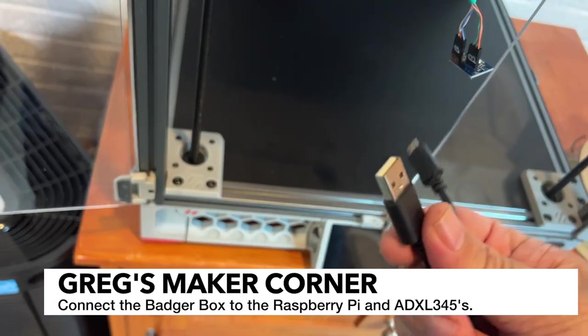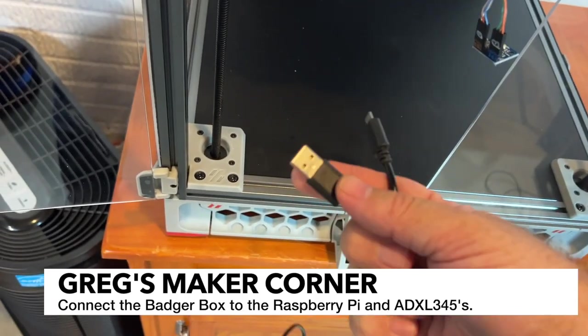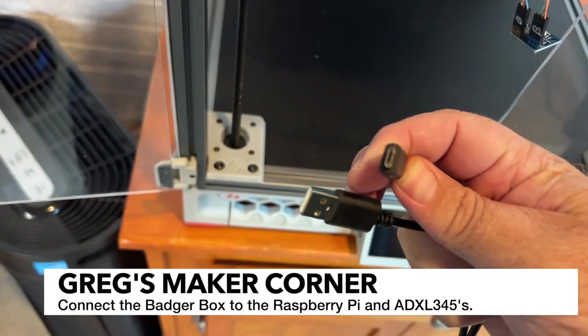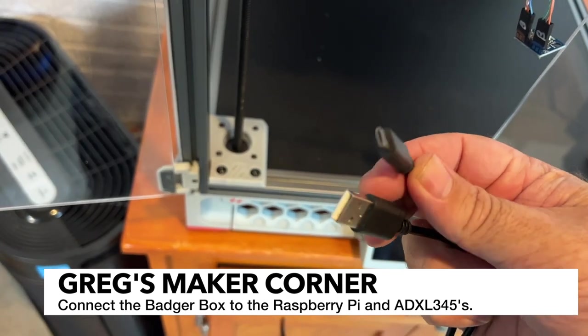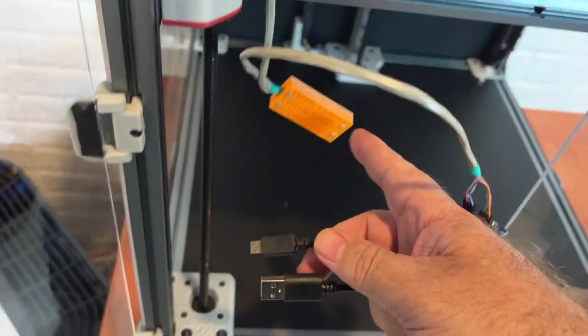Next up I'm just going to be connecting this end to the Raspberry Pi and then this end, make sure you get the right cable type and that it works with data. This end will go into the BadgerBox.